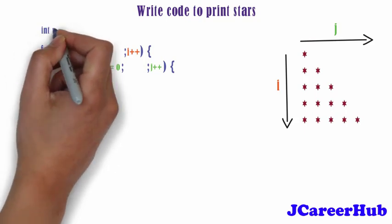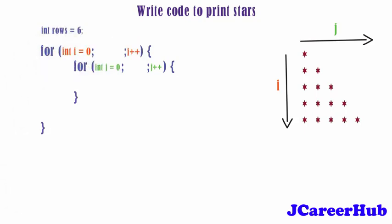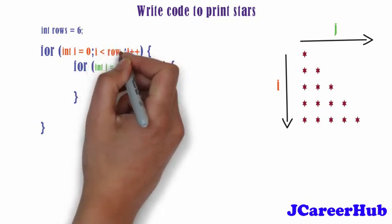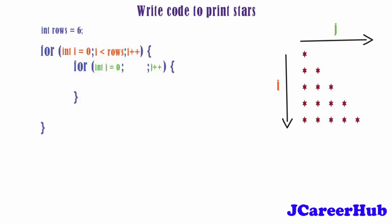Suppose we have to print 6 stars in last row. So put condition as I should be less than rows. And once it will satisfy this condition it will break outer for loop.